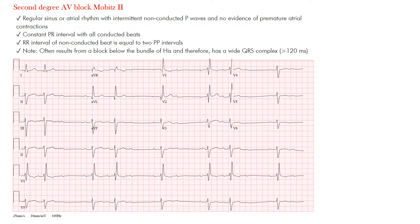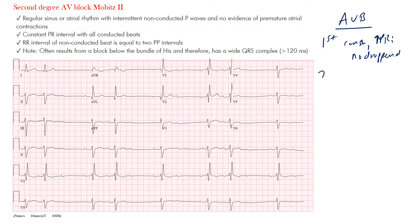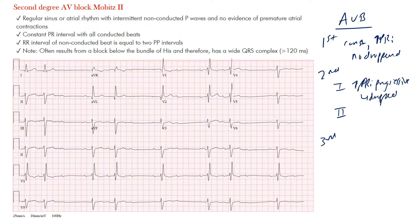Let's get started with second degree AV block, Mobitz type 2. To review: in first degree AV block, we had a constant prolonged PR interval with no dropped beats. In second degree type 1, we had a progressively increasing PR interval until a dropped beat occurred — longer, longer, longer, drop — that's Wenckebach, or type 1. Now in type 2, we have a constant PR interval and then intermittent dropped beats.